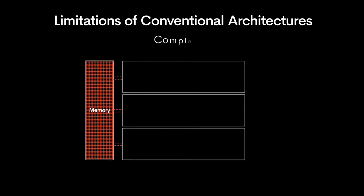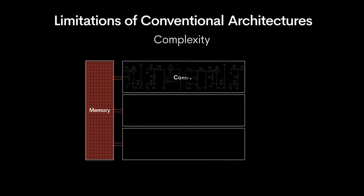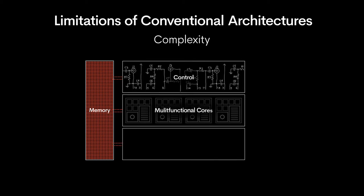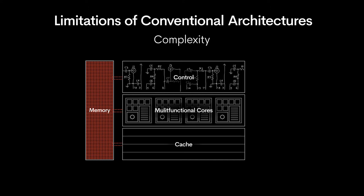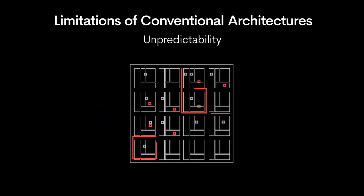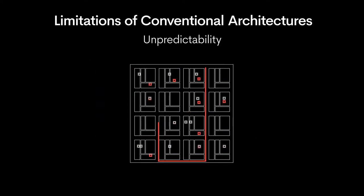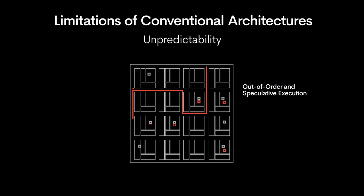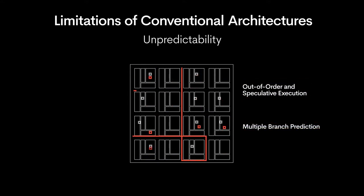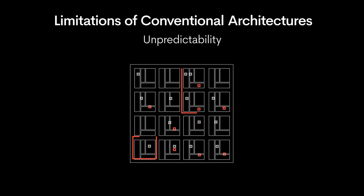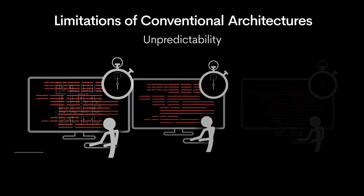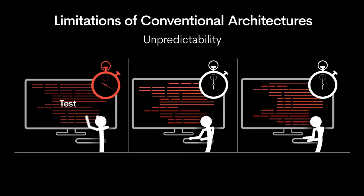In conventional architectures, performance comes with complexity in the form of complicated control circuitry, multi-functional cores, and multi-level caches. There's a lot of silicon — sometimes more than 60 percent — that is not used for compute. Unpredictability is the unavoidable consequence of out-of-order and speculative execution and multiple branch prediction.